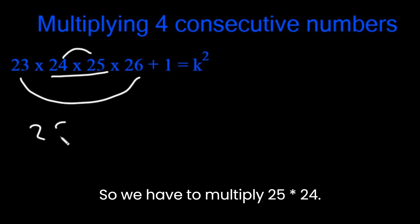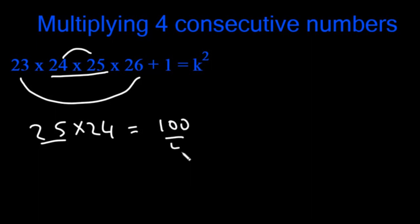So we have to multiply 25 times 24. So 25 is 100 over 4. The 24 cancels, giving us 6. 6 times 100 is 600.